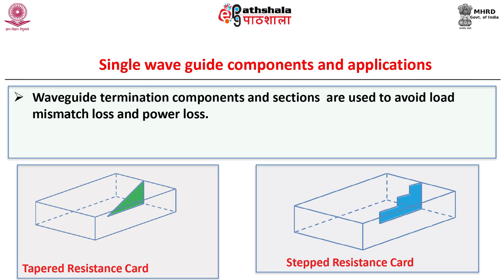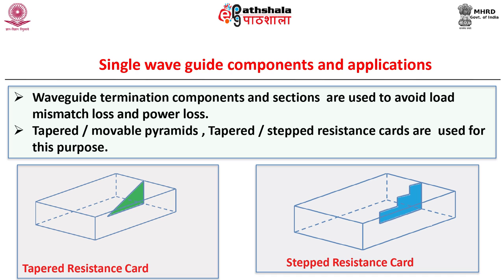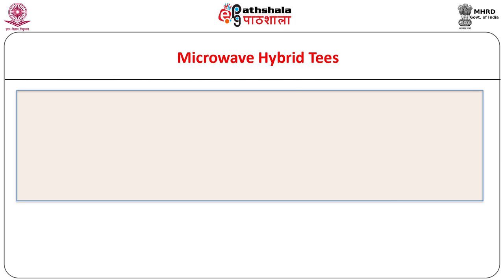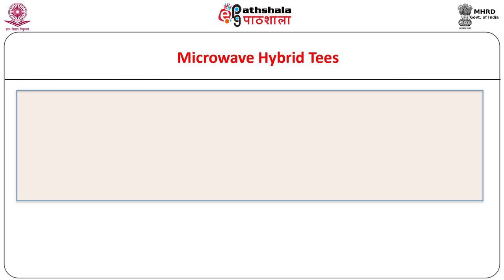We can have waveguide termination components and sections to avoid such mismatch loss and power loss. Tapered or movable pyramids can be used for this purpose. Tapered or stepped resistance cards are also used for the same purpose. The discussion done so far gives some information about the components involving a single waveguide. Now let us turn to the discussion of a little more complicated topic: microwave circuits and devices. We know that an assembly of microwave devices connected to each other so as to achieve the transmission of microwave signal in the desired way may be called as a microwave circuit.